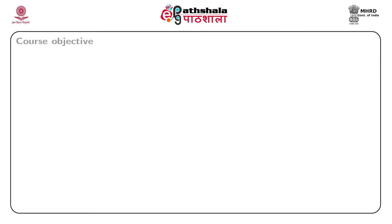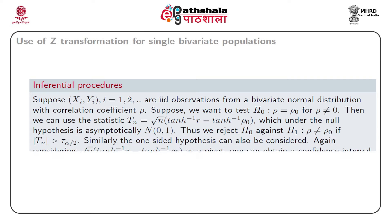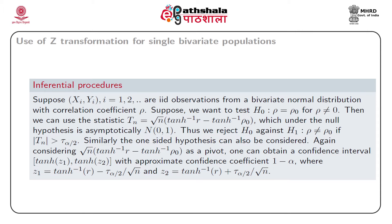In our last module we have seen what is z transformation and how to obtain such a transformation as a variance stabilization technique. In this module we start with use of z transformation for single bivariate populations, discussing different inferential procedures. Suppose x_i, y_i are iid pairs of observations from a bivariate normal population with correlation coefficient rho, where the other parameters are also unknown.